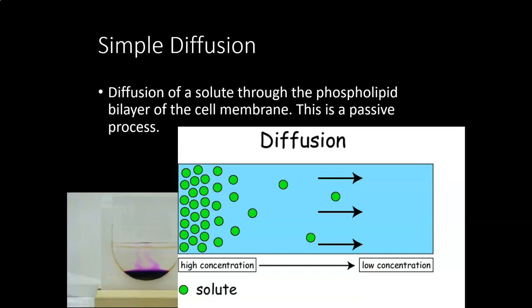Simple diffusion is the movement of a solute from an area of high concentration to an area of low concentration. If you put one drop of food coloring in water and walk away, in 10 minutes that food coloring will be dispersed throughout the container — that's diffusion. The particles want to spread out and equalize concentration all on their own, with no energy required.